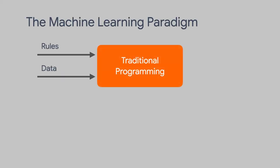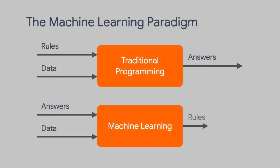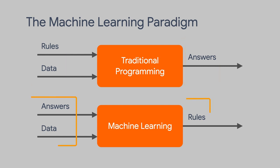So we change the diagram to this. Instead of rules and data in, we give the answers. We have the answers and the data coming in, and it's up to the computer to figure out the rules. And that's what machine learning is all about — it's really that simple.